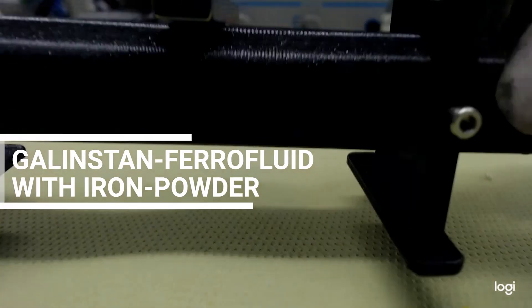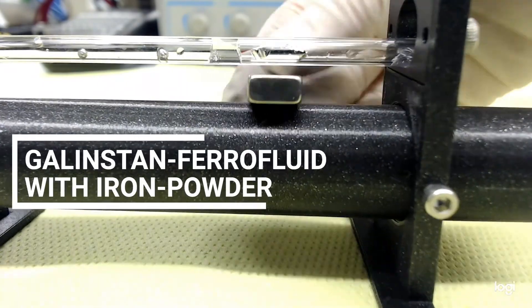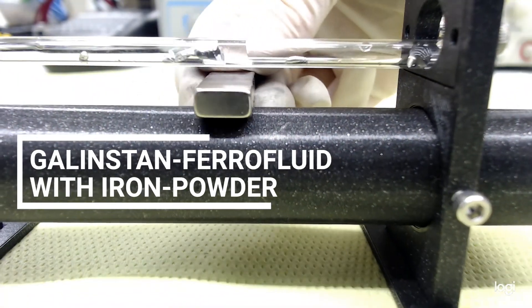And here, once more, the iron Galinstan, which forms a beautiful Rosenzweig effect in liquid metal.